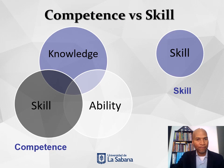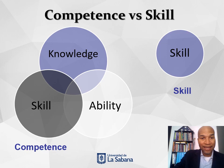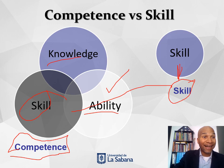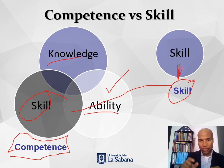Since we're talking about both competences and skills, I thought it would be interesting to clarify the differences. Knowledge, skills, and abilities together make up what we call a competence. A skill is only one of those elements. Lots of times you will see both concepts either separate, together, or even mixed, because there is a fine line between them — but the goal is to be clear that a competence corresponds to knowledge, skills, and abilities, while a skill is just one of those things.